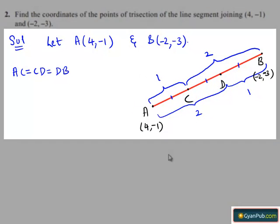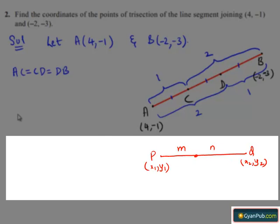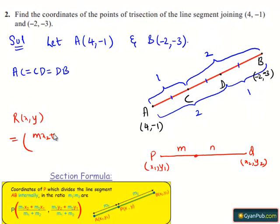We know that the coordinates of the point R, which divides the line segment joining P(x1, y1) and Q(x2, y2) in the ratio M:N internally, is given by R(x, y) = ( (Mx2 + Nx1) / (M + N), (My2 + Ny1) / (M + N) ).